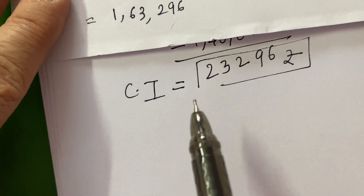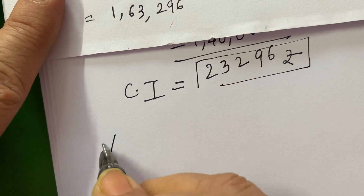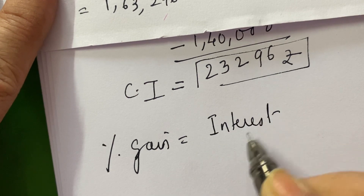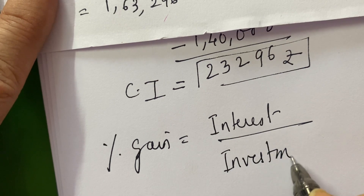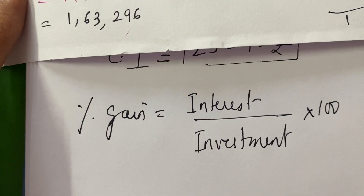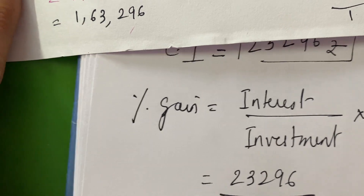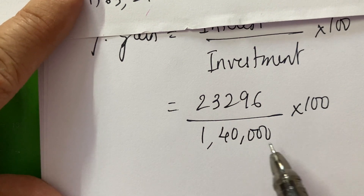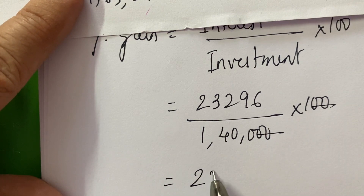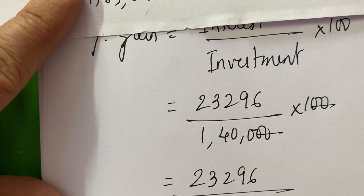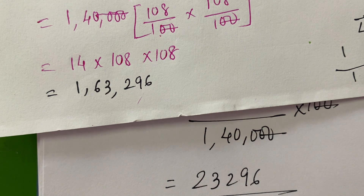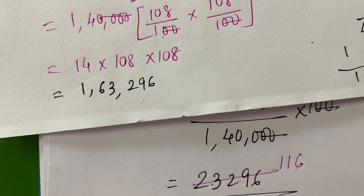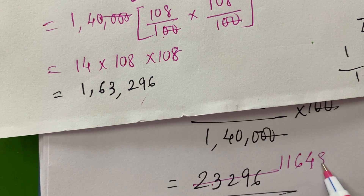Now we have to find out the percentage gain or percent profit. Percent gain will be equal to the interest upon the investment multiplied by 100. Interest is 23,296 and investment is 1,40,000. Multiply by 100 — both zeros are cancelled. You are left with 23,296 divided by 1,400.